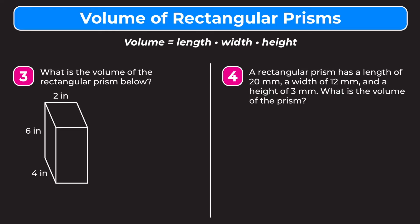So for number three, we have a rectangular prism drawn out here with the dimensions of 4 inches, 6 inches, and 2 inches. So let's start by writing our formula. We have V equals L times W times H.